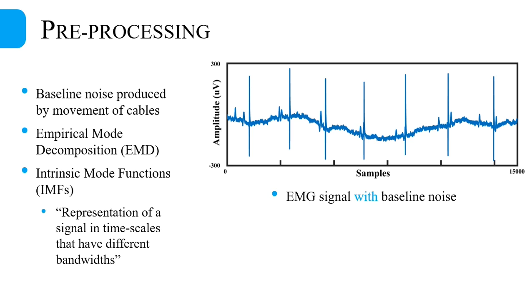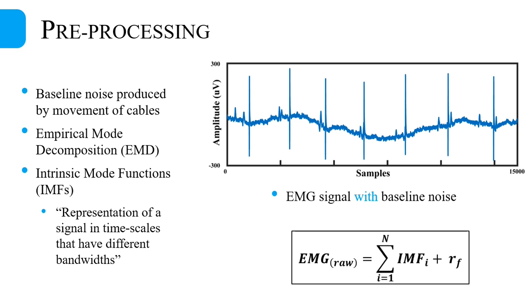The most common type of noise that causes irregularities in EMG signals is baseline noise. Baseline noise or motion artifacts are low-frequency components produced in the EMG signal by the movement of cables used for data acquisition. In order to remove motion artifacts from EMG data, we use empirical mode decomposition, which decomposes complex data into a finite number of intrinsic mode functions. As shown by the equation, EMD decomposes the raw EMG signal into N IMFs and a final residual.